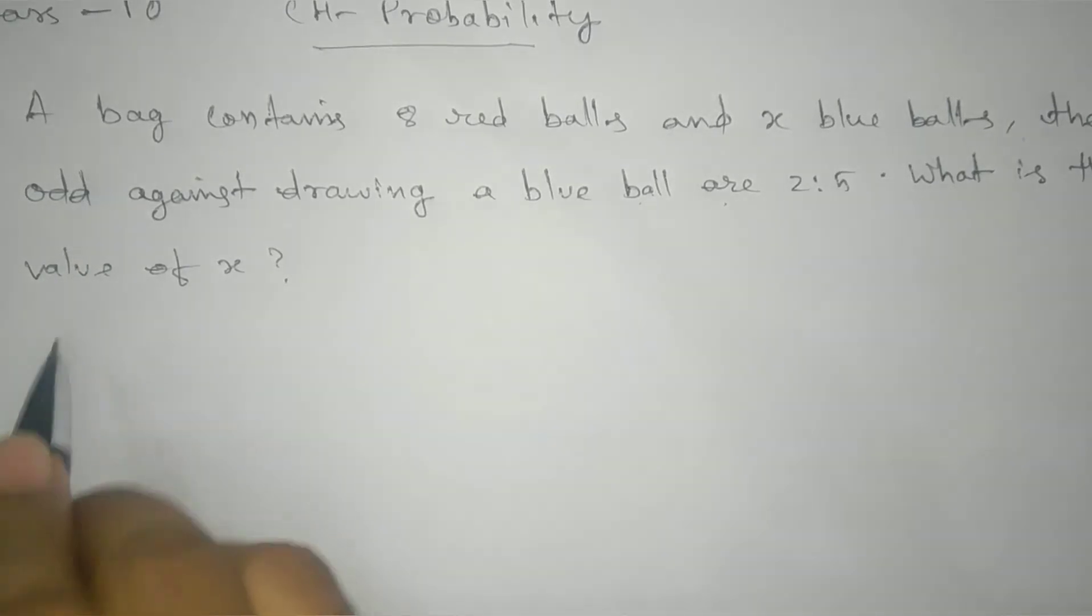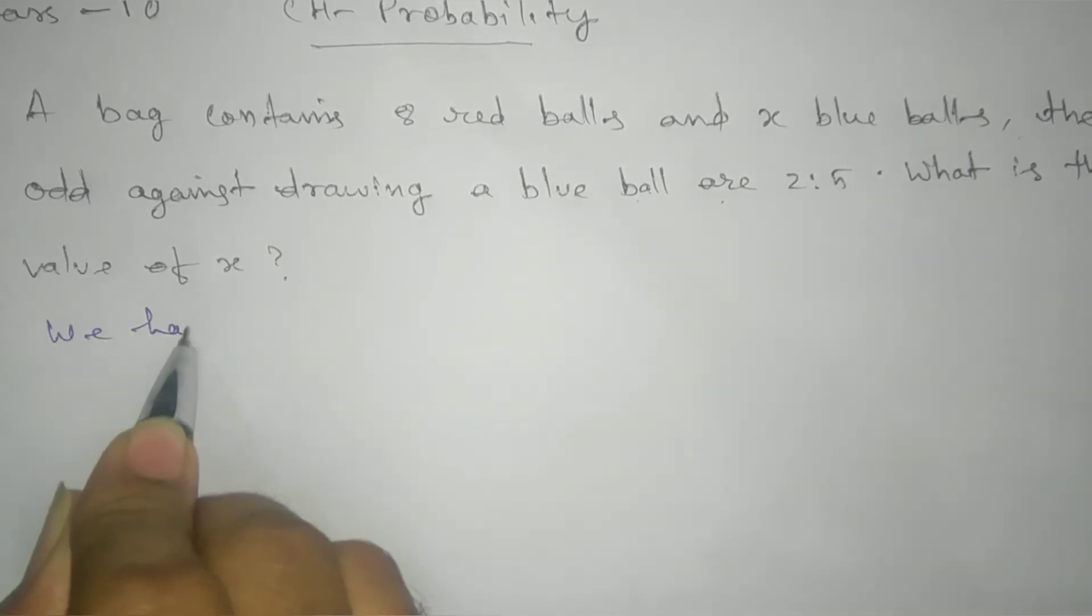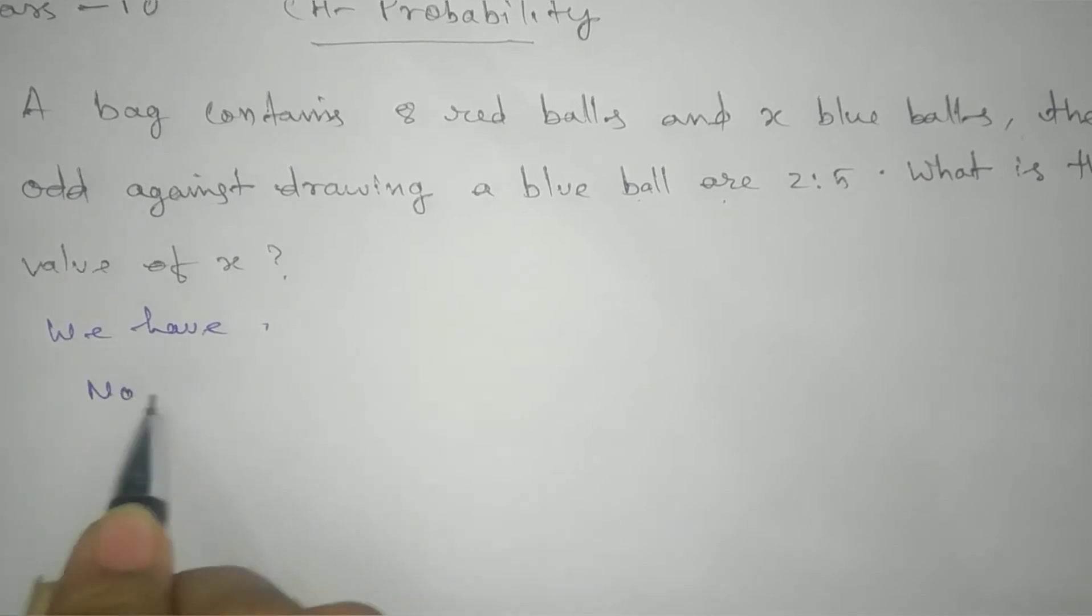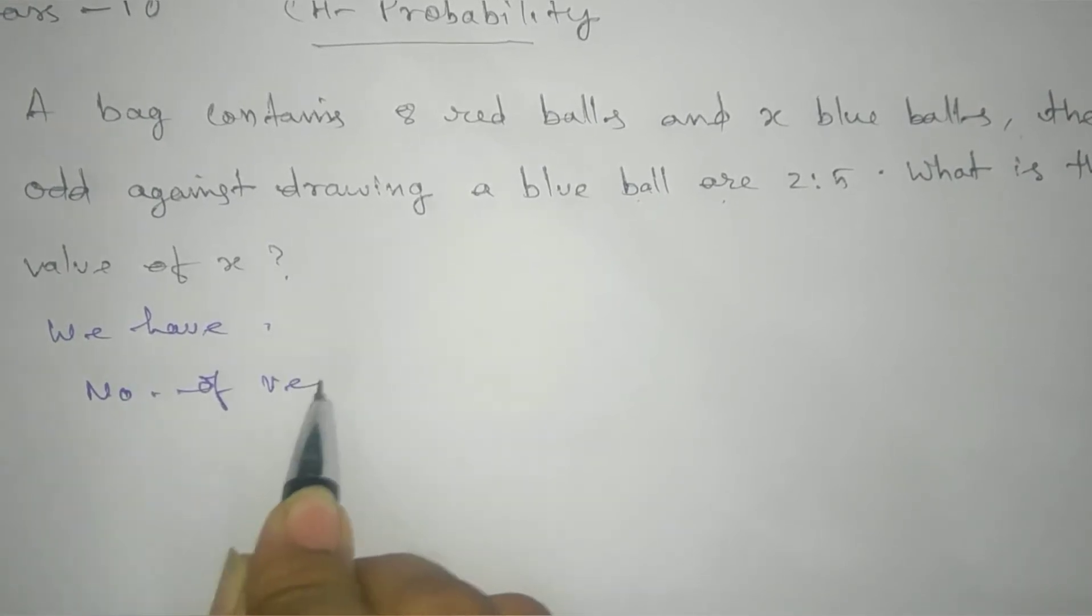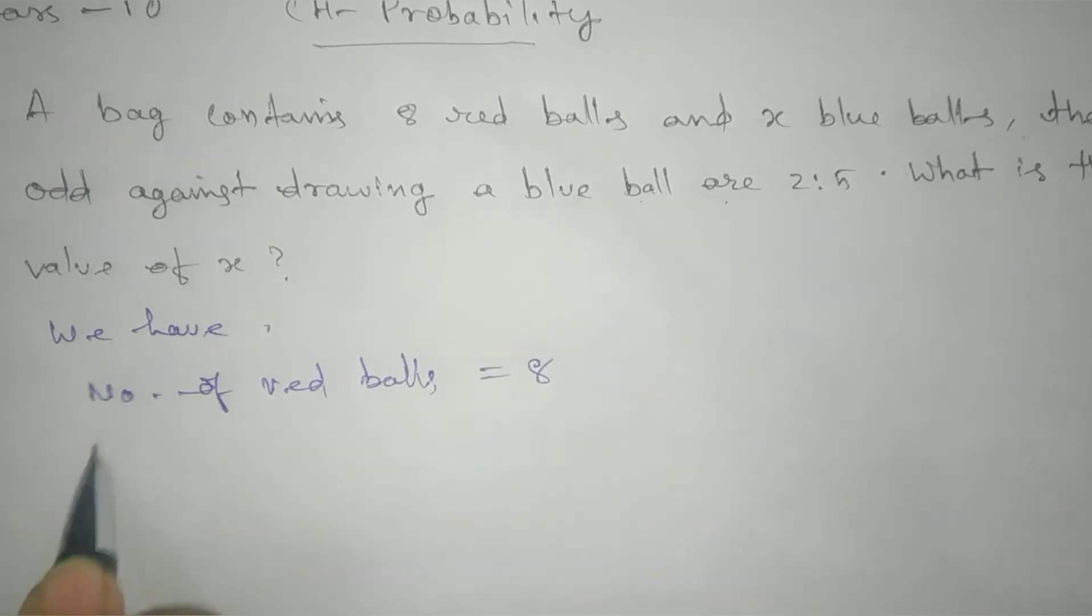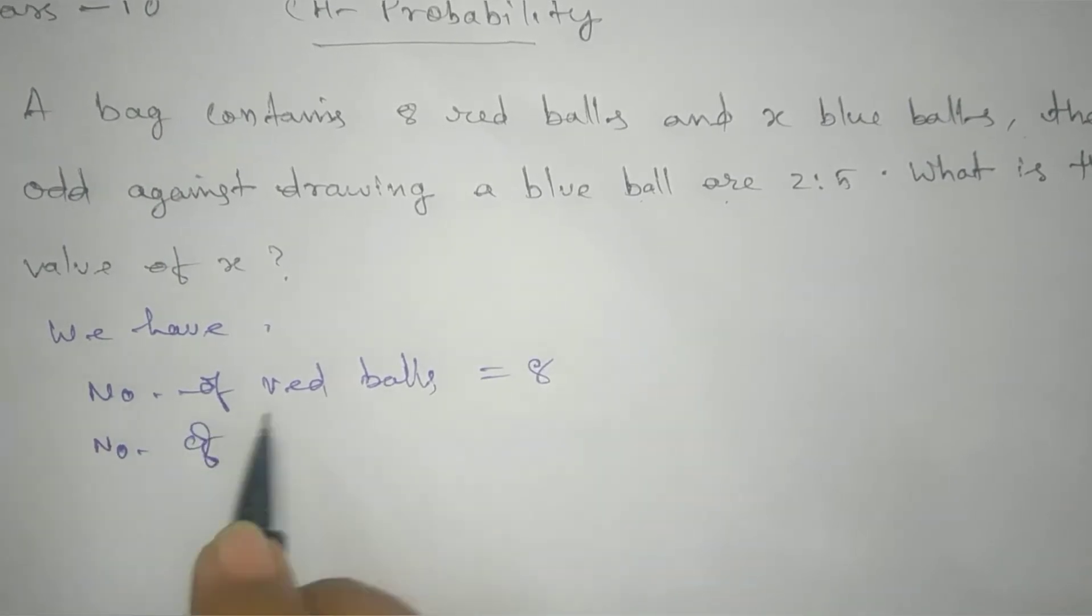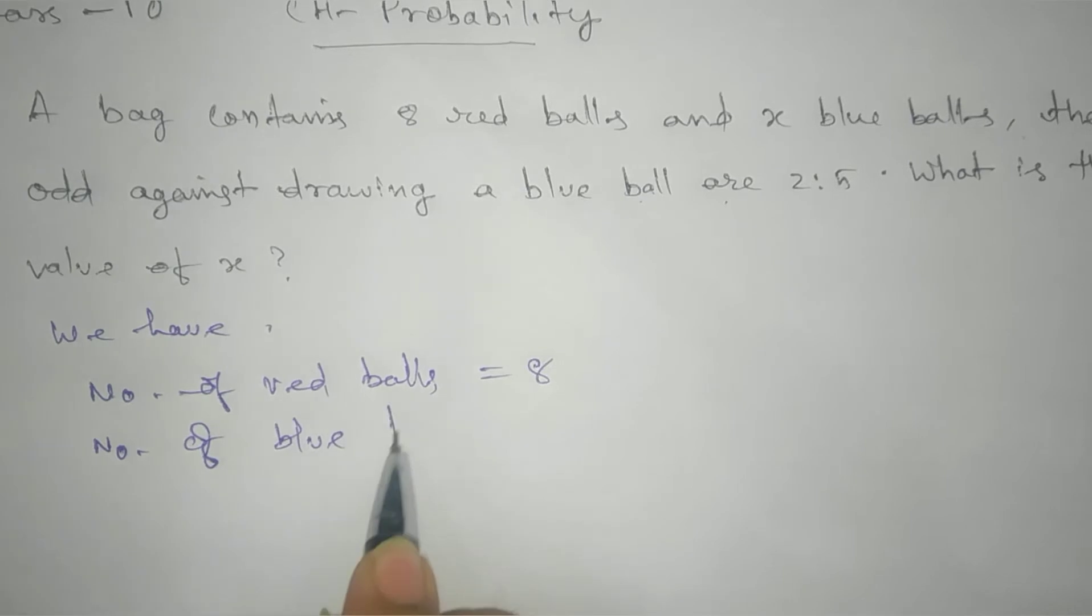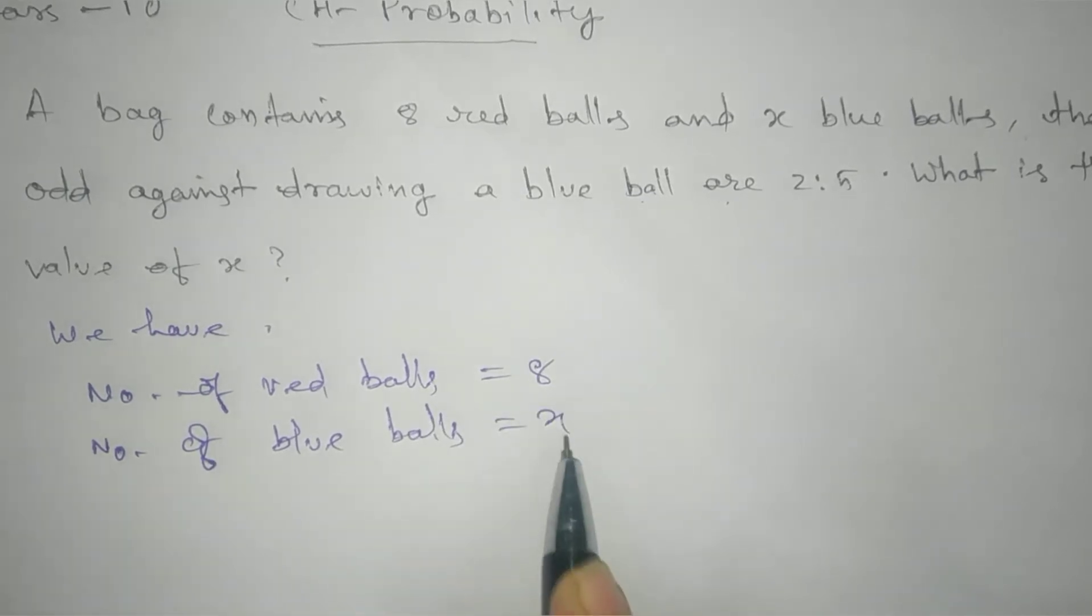So here's what we have: Number of red balls equals 8. Number of blue balls is x, which we don't know and need to find. Now total balls equals 8 plus x.